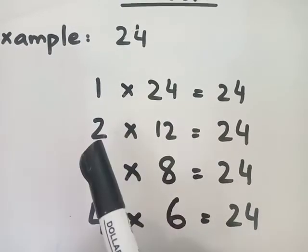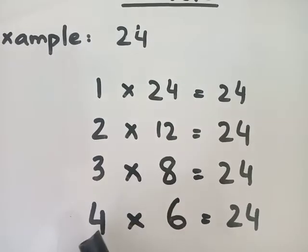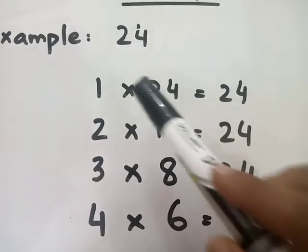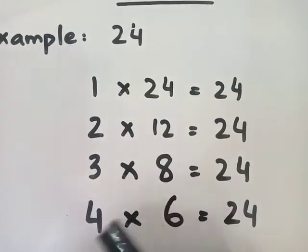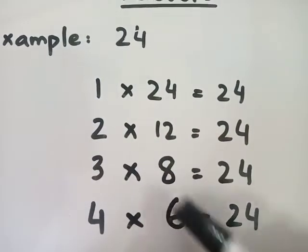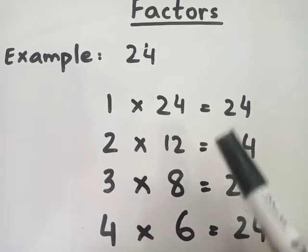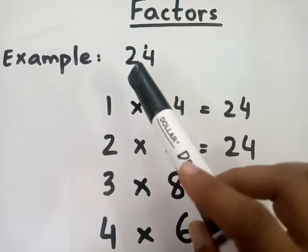1, 24, 2, 12, 3, 8, 4, 6. Means 1, 2, 3, 4, 6, 8, 12, 24. These are 8 numbers and all these 8 numbers are the factors of 24.